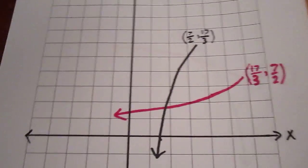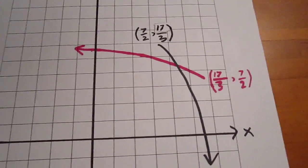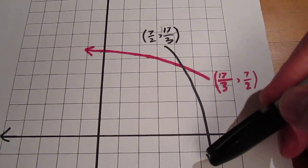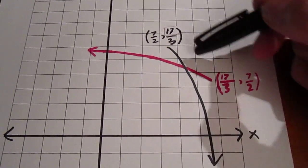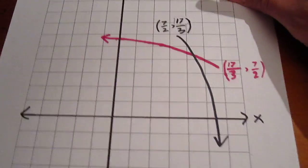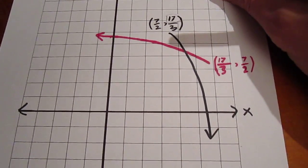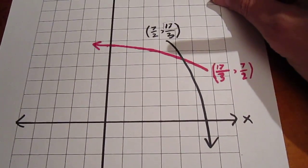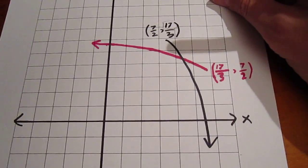If we chose to say that x was greater than or equal to 7 halves, we would get an inverse where y was greater than or equal to 7 halves, which would correspond to the upper bar on the sideways opening parabola.